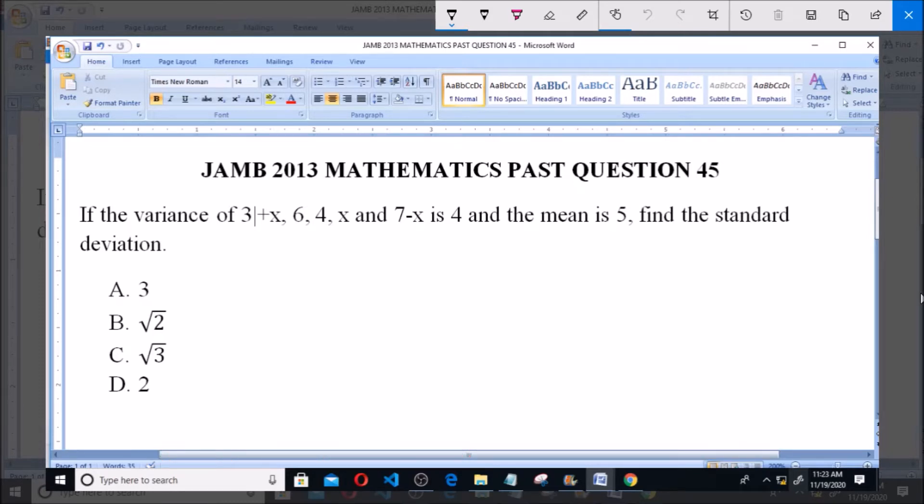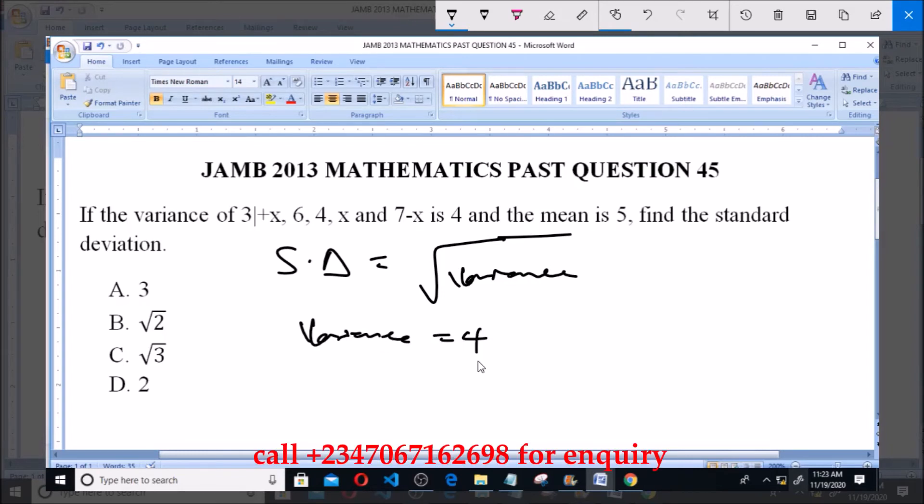Now, as we know, standard deviation (SD) is the square root of variance. We're already given variance from this question to be 4. That means standard deviation SD equals the square root of 4, which equals 2.